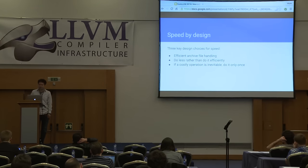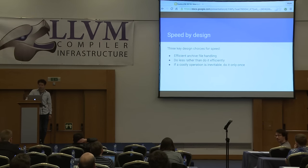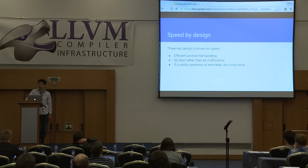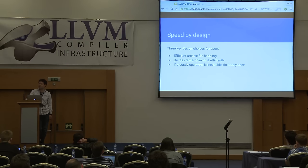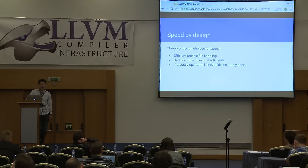How did we achieve these numbers? There are a few decisions I made to create a high-performance linker. First, our archive file handling is more efficient than traditional Unix linker semantics. Second, we carefully designed the linker so that it doesn't read any data ahead of time — data read from disk that's not needed for linking is just discarded, which saves time. Lastly, if we have to do some costly operation, then we do it only once. We obtain a handle on the first operation and use it throughout the process to avoid repeating the costly operation.